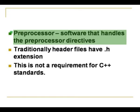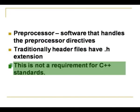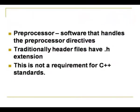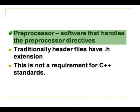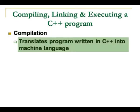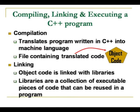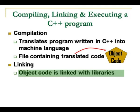The preprocessor is defined as software that handles the preprocessor directives. Traditionally, header files should have the .h extension, but this is not a must for C++. If you write hash include iostream without .h, it is taken the same way as hash include iostream.h — we normally use .h because it is a header file. Compilation is the process of detecting errors in the C++ program. An error-free program is translated into low-level machine language. The file containing this translated code is called the object code. First you write the program as a C++ file; after it is compiled, it becomes the object code.